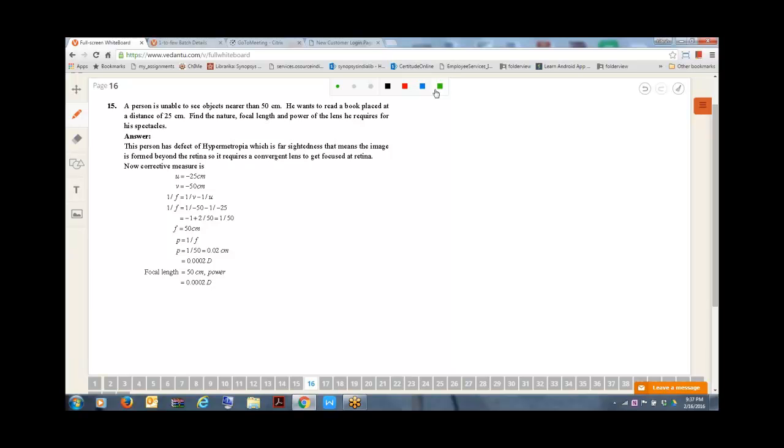First of all, we need to figure out that this is a case of hypermetropia because we are not able to see the nearby objects. It is given in the question itself that a person is unable to see objects nearer than 50 centimeters.